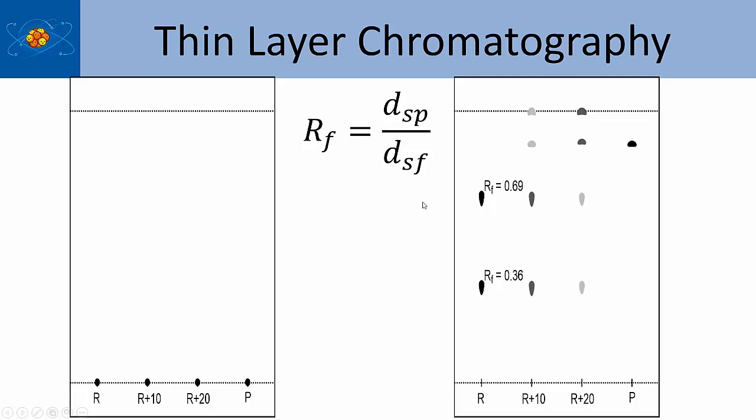One of the things you'll have to be able to do is calculate the retention factor, RF. It's the distance the spot travels from the origin. For example, if you put your spots down here, and later it moves to here, and this is the solvent front, then what you'll do is take this distance from the origin to the spot and divide it by the distance from the origin to the solvent front. It's really the fraction of the distance that the material has moved on the plate.